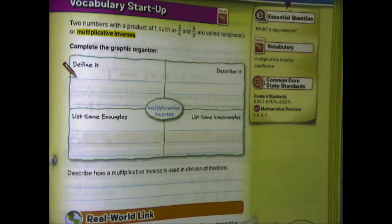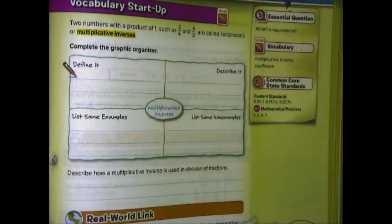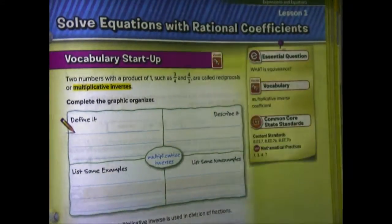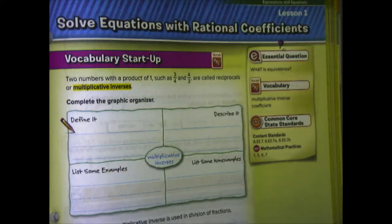Let's begin Chapter 2, Lesson 1: Solve Equations with Rational Coefficients. The last couple of days we've been talking about fractions and multiplying and dividing fractions, and the reason for that is because we need to solve equations with rational coefficients. Rational includes natural, whole, integers, but it also includes fractions and decimals. So this lesson is going to be solving equations with fractions and decimals.